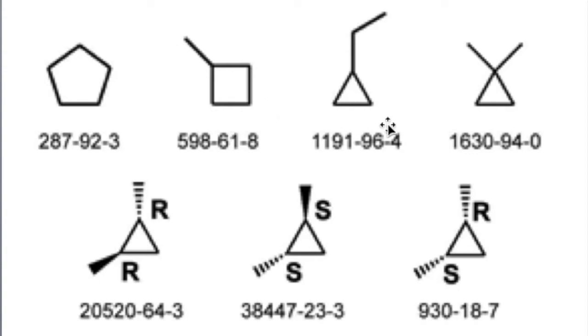And then we have ethyl-cyclo-propane, which is this triangle which is called cyclopropane with an ethyl group sticking out of it.